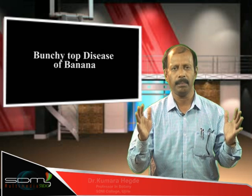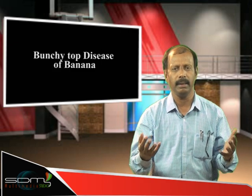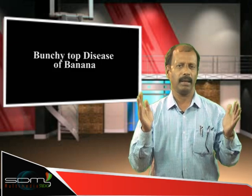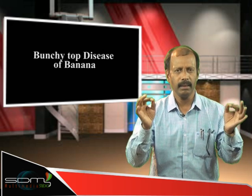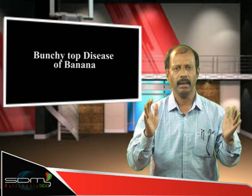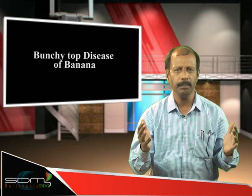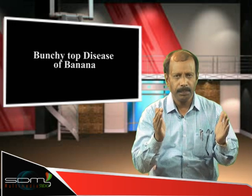The very important symptom is bunchy top. Bunchy top means particularly the older leaves become brittle, stunted, and form almost a rosette-like structure at the tip. That is the typical and most important symptom of the disease.